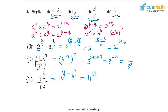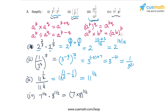For the fourth part, we have 7 to the power 1/2 times 8 to the power 1/2. The exponents are the same but the bases are different, so we can multiply the bases and take the exponent as common: (7 × 8) to the power 1/2. Using the fourth law, 7 times 8 is 56, so this simplifies to 56 to the power 1/2.